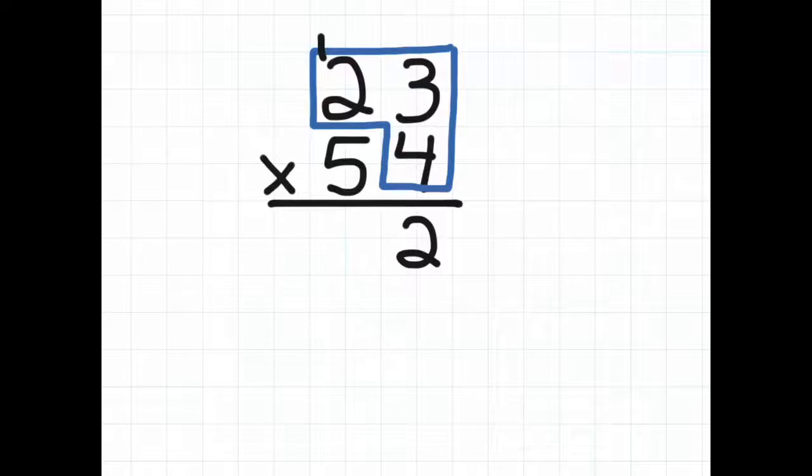So now we do 4 times 2 which is 8 plus our little 1 up here and that is 9. So we bring down the 9 into the 1's column.